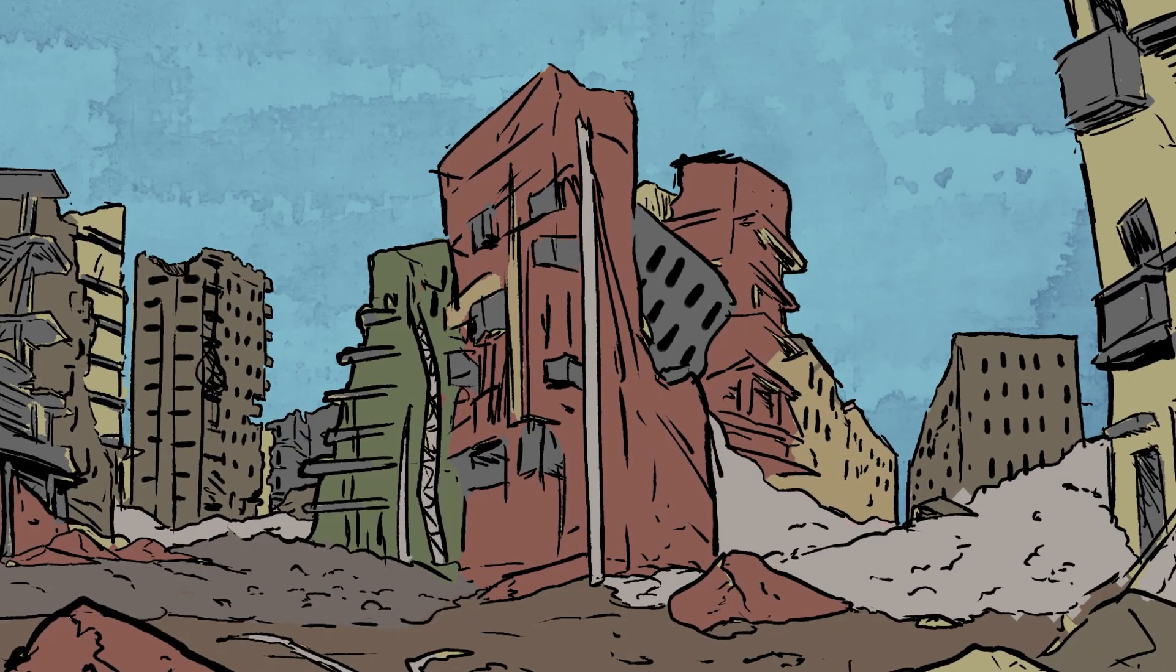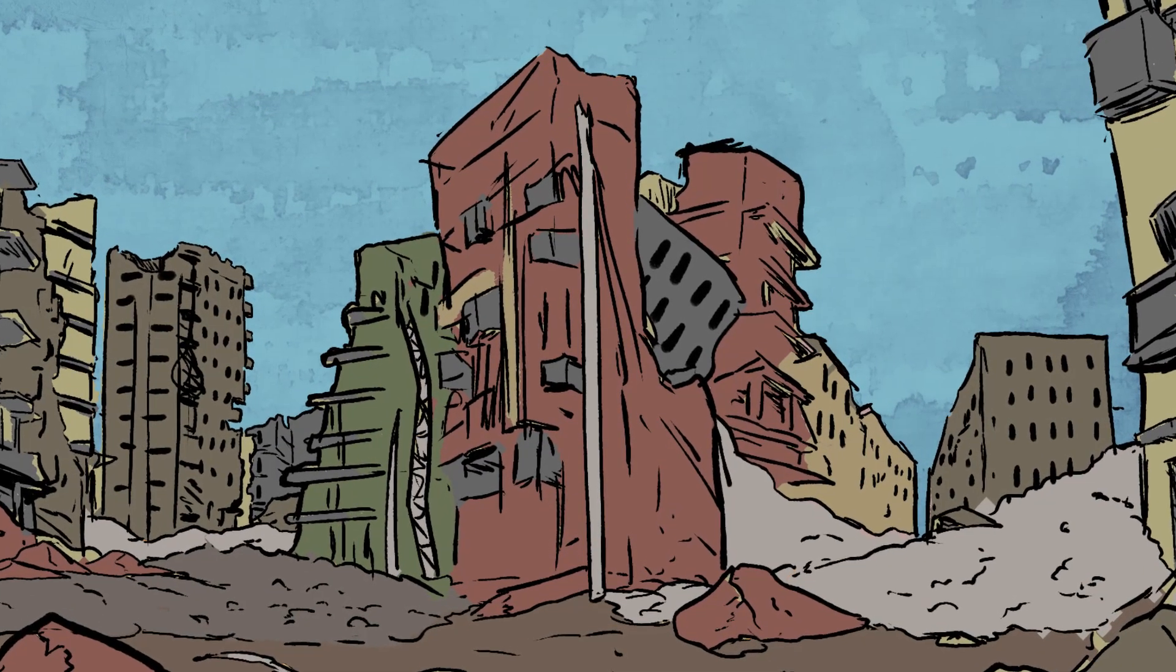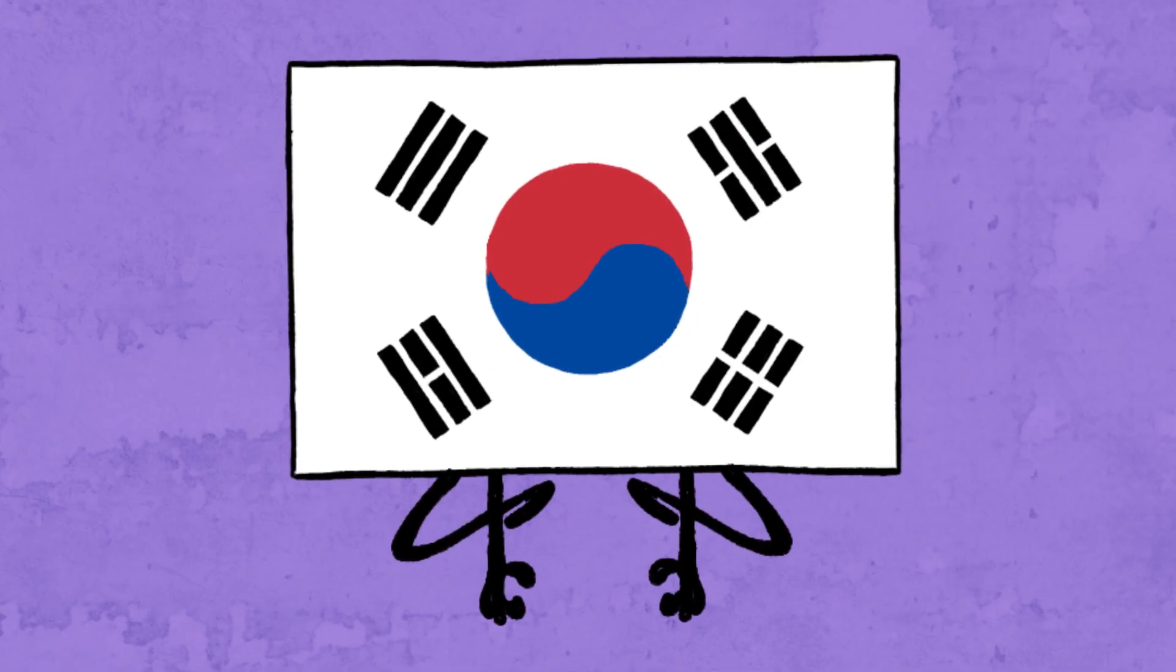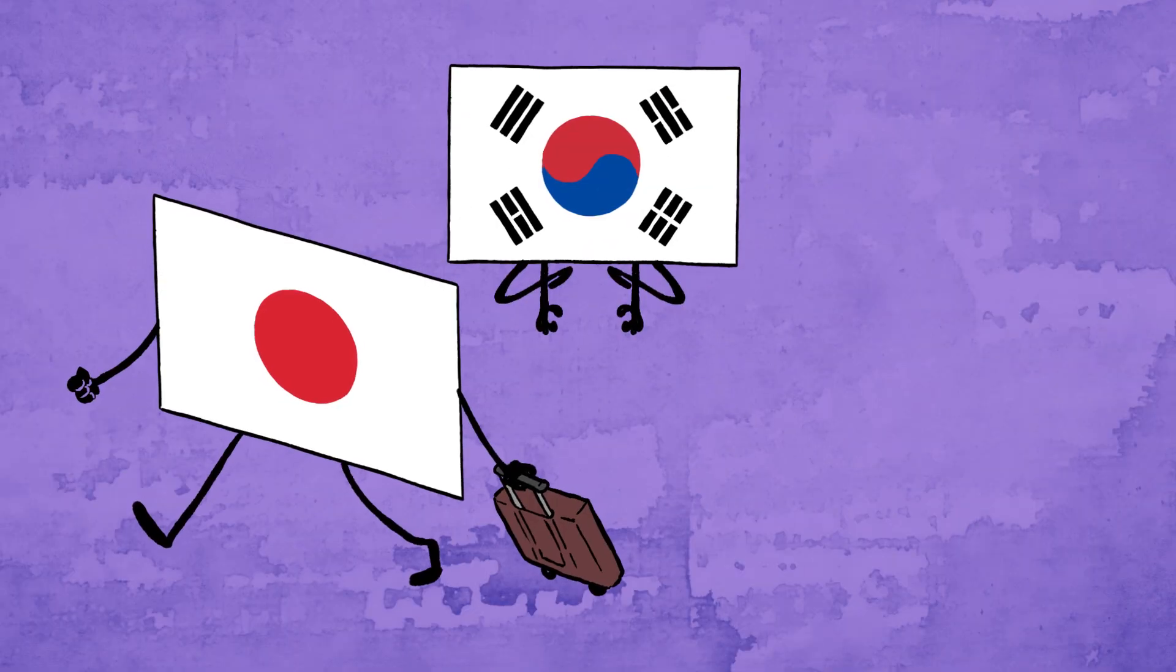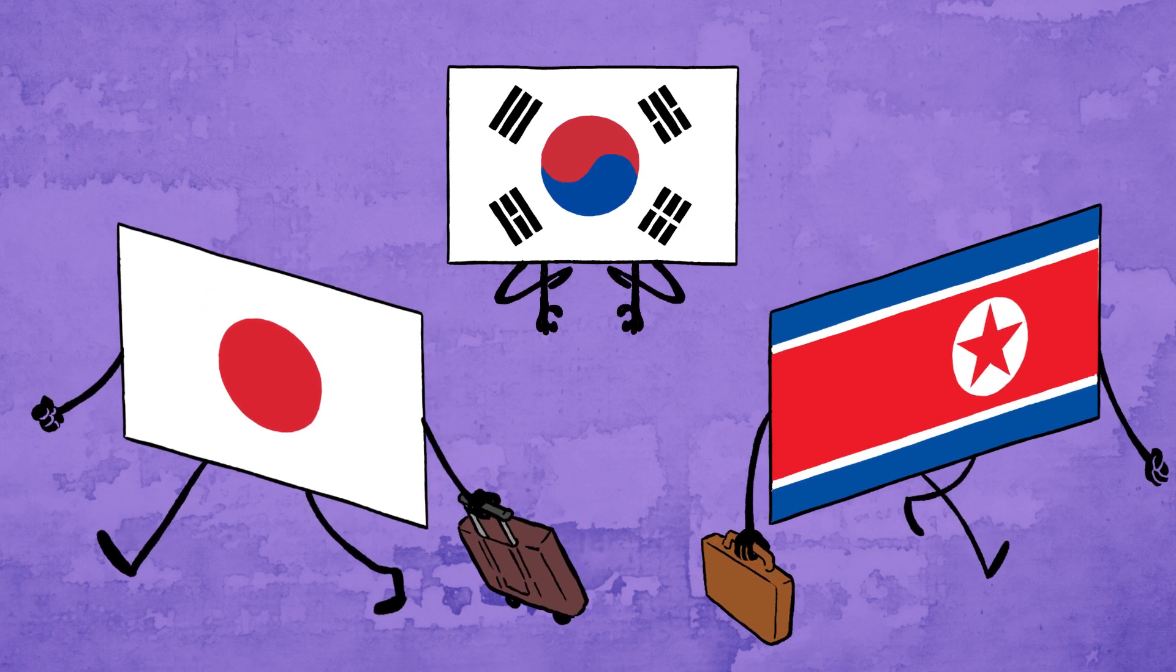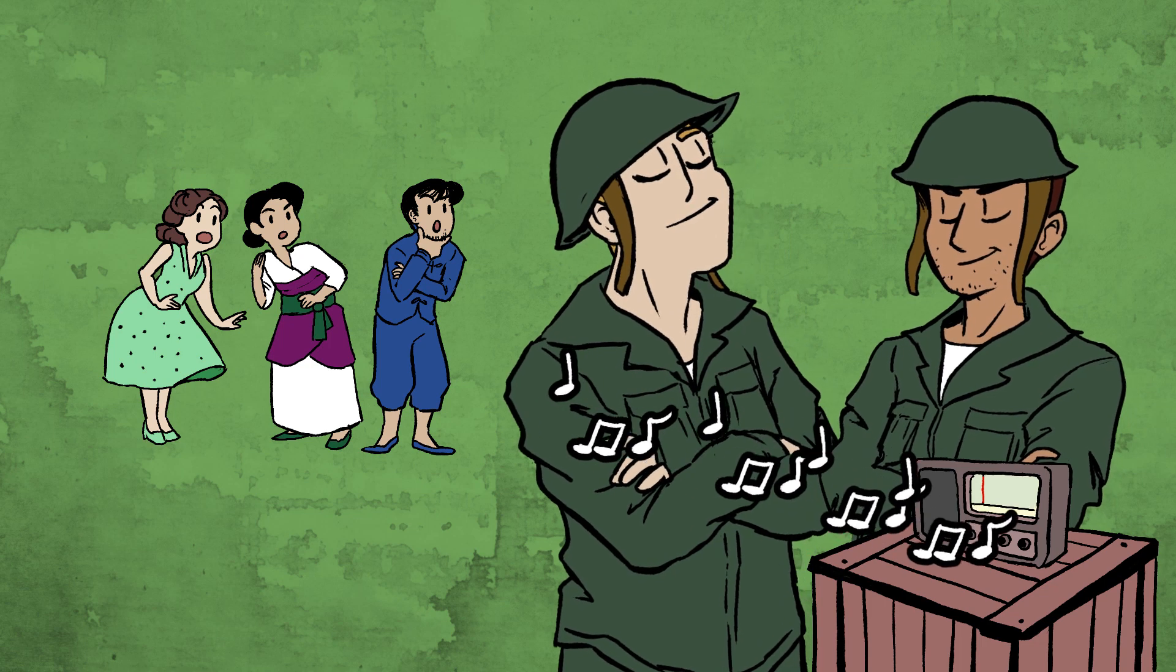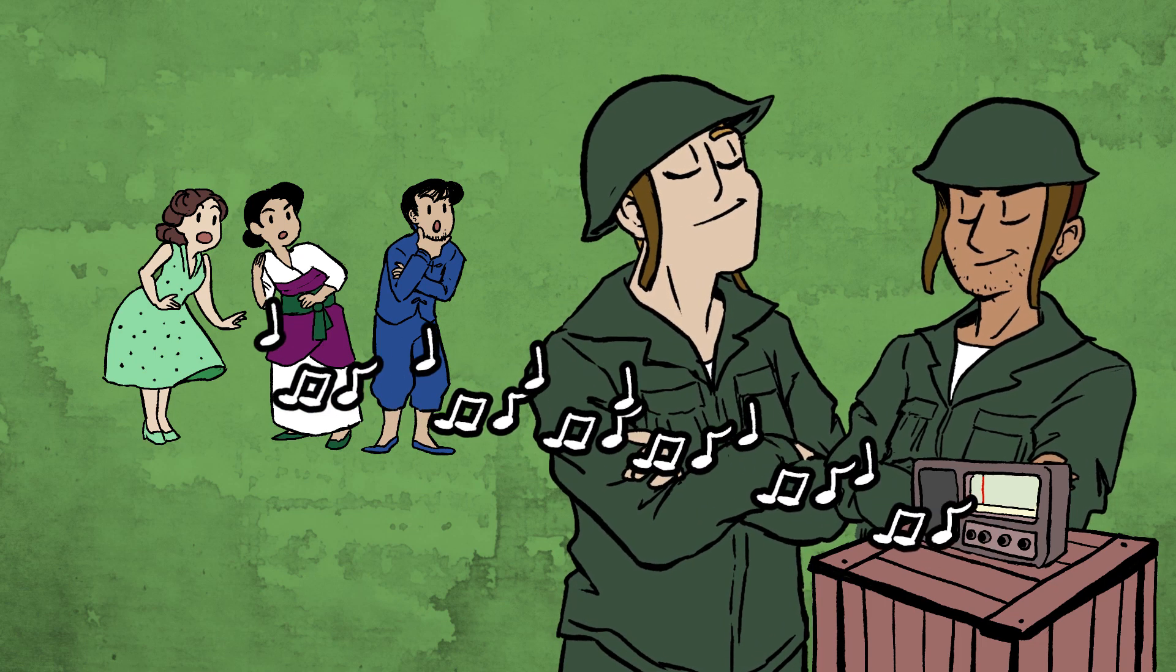Our story begins at the end of the Korean War, when South Korea is a bit of a mess. Buildings and infrastructure are in ruins, and the country just went through a terrible double breakup. First, Korea broke up with Japan, and then North Korea broke up with South Korea. To help with South Korea's breakup woes, American soldiers and missionaries started flooding the country with sweet American pop music.